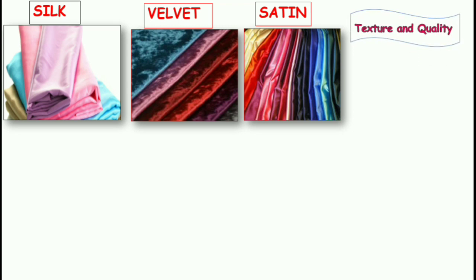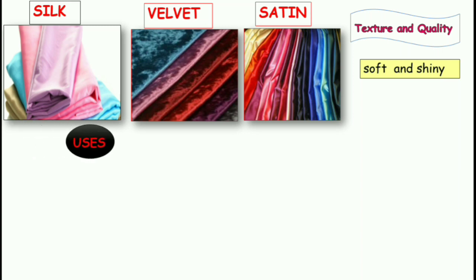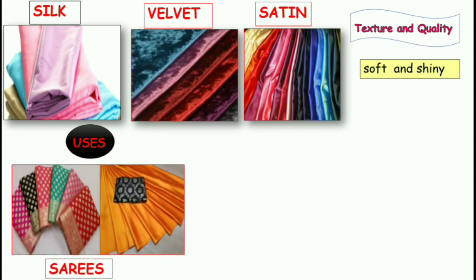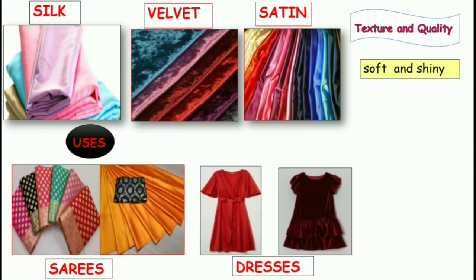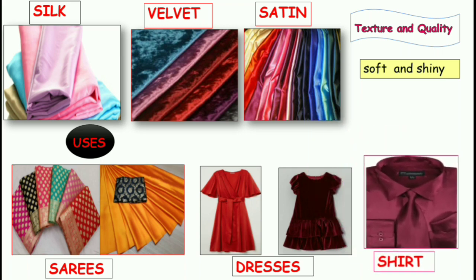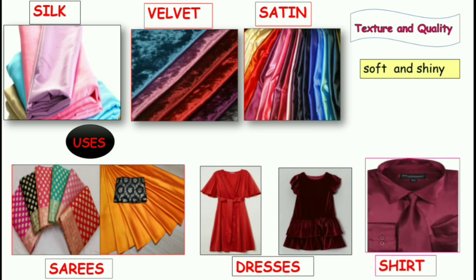Their texture and quality: they are soft and shiny as you can see. Now let us see their uses — what can be stitched or made using these materials. We can make sarees — silk sarees, satin sarees. We can also have dresses — silk, satin, and velvet dresses, as you can see in this picture. Also satin and silk shirts. These are some of the clothes made using silk, velvet, and satin.